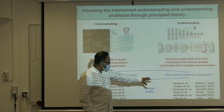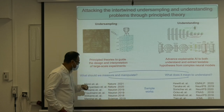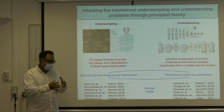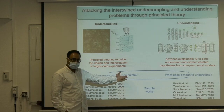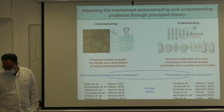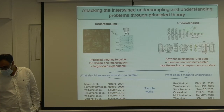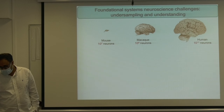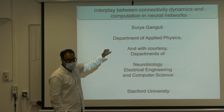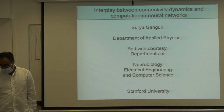In concert with an answer to what it means to understand, even in restricted settings, this can help guide the design of experiments — what should we measure, what's worth measuring, how should we manipulate the system. These are all deeply intertwined questions. So the one theme for this set of lectures is the interplay between connectivity, dynamics, and computation in neural networks — that's the overarching theme for the five lectures.